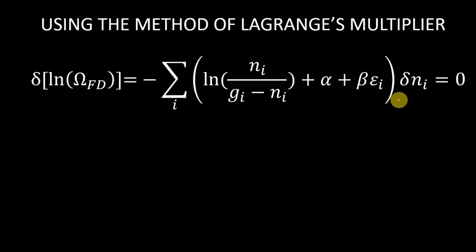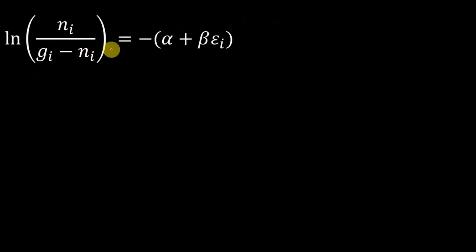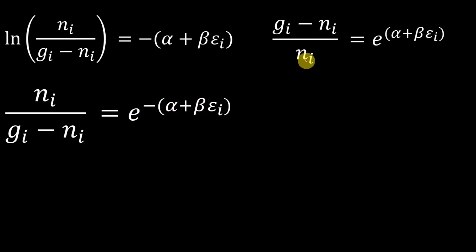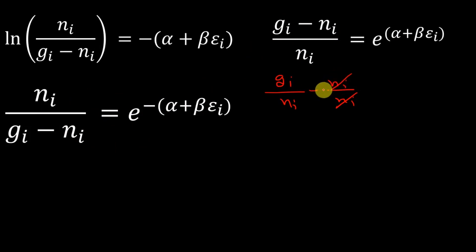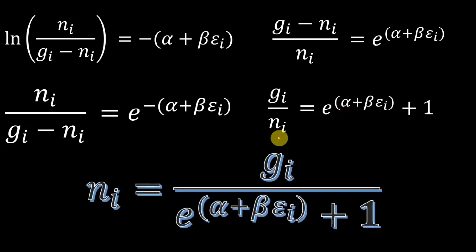Setting the whole expression equal to zero means the bracket inside is also zero. Rearranging, log(N_i/(G_i - N_i)) = -(alpha + beta·E_i), so N_i/(G_i - N_i) = e^(-(alpha + beta·E_i)). Flipping and separating gives (G_i - N_i)/N_i = e^(alpha + beta·E_i), which simplifies to G_i/N_i = e^(alpha + beta·E_i) + 1.